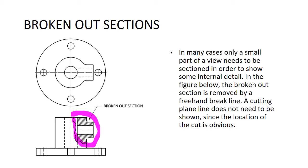Broken out section. In many cases, only a small part of a view needs to be sectioned in order to show some internal detail. In the figure below, the broken out section is removed by a freehand break. A cutting plane line does not need to be shown since the location of the cut is obvious. You can see where that squiggly line is, I circled this in purple. That's what a broken out section is. We're just taking a little bit of it, we don't need to slice all the way through, we just need a little bit of this broken out.